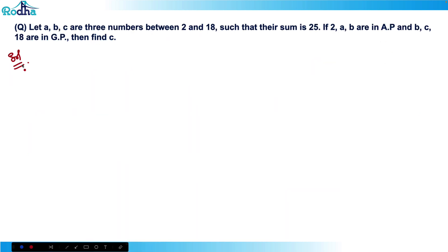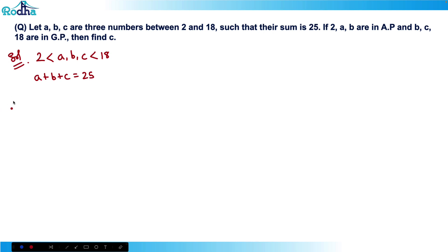Let's look at the second question. Let a, b, c be three numbers between 2 and 18 such that their sum is 25. If 2, a, b are in AP and b, c, 18 are in GP, find c. We know a + b + c = 25. Since 2, a, b are in AP, twice the middle term gives 2a = 2 + b, so a = (1 + b/2) = (2 + b)/2.